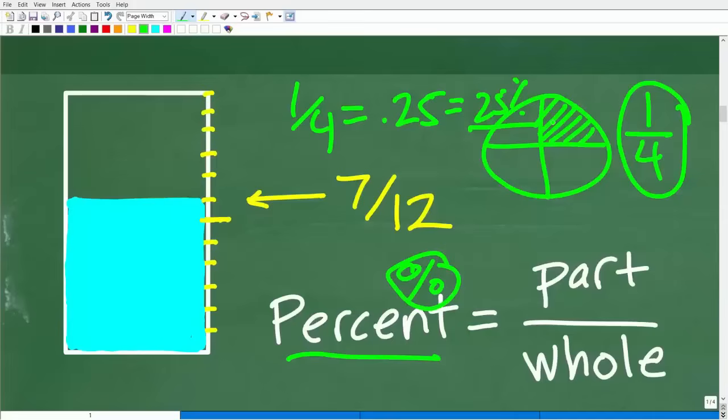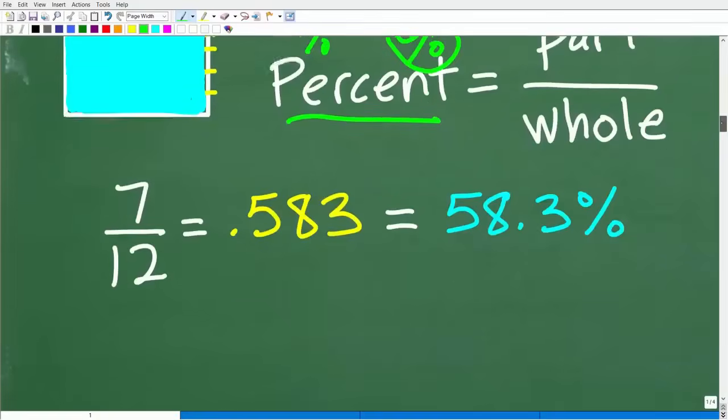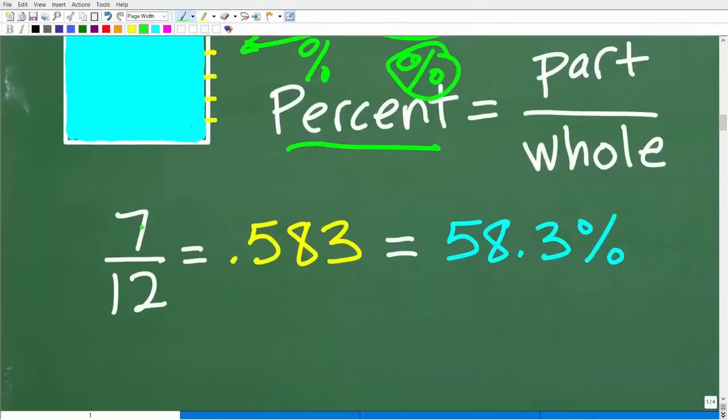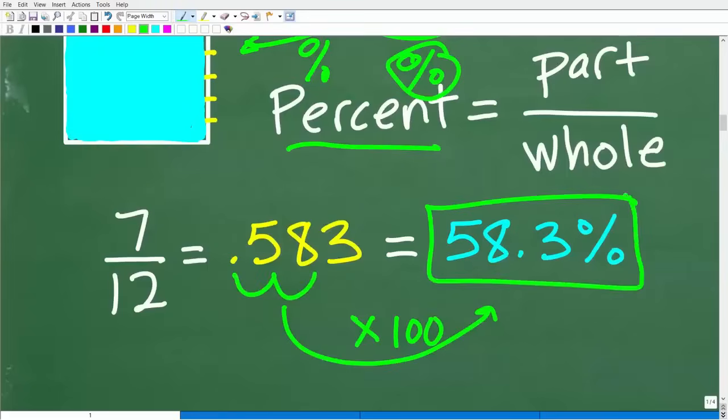Now, why do I bring that up? Well, here, if I know the 7/12 of this cup is full, we might want to consider, hey, let's just get this in percent value right here. How much of the, what percent of the cup is full? So what we could do is take that 7 over 12, and in our calculator, just take 7 divided by 12, you're going to get 0.583, and I'm just kind of rounding off here. So this is a decimal. Now, how do I go from a decimal to a percent? Pretty easy. All you have to do is multiply by 100 or move the decimal point over two places to the right. So our cup here is about approximately 58.3% full.